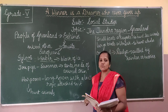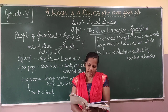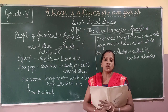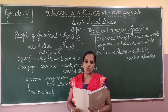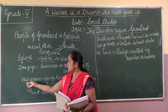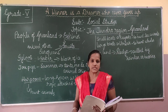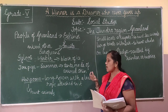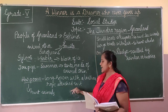The Eskimos are excellent hunters. They hunt seals, whales, and polar bears. In the past, they used harpoons to hunt animals. They used to hunt seals, whales, walrus, and polar bears for their food using harpoons. A harpoon is a long spear with a leather rope attached to it.